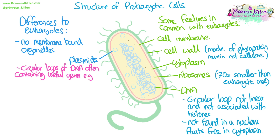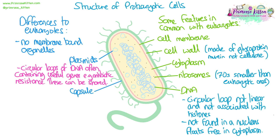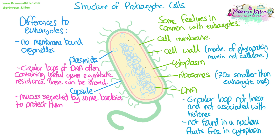Bacterial cells contain plasmids. These are extra little circular loops of DNA that often contain useful genes such as antibiotic resistance. It is also possible for bacteria to share these plasmids with one another. The capsule is a mucus-like substance secreted by some bacteria — not all — but it helps to protect them from drying out and also from attack from chemicals such as antibiotics.